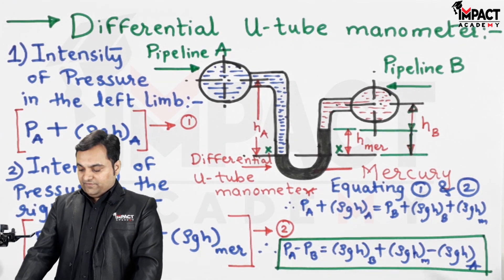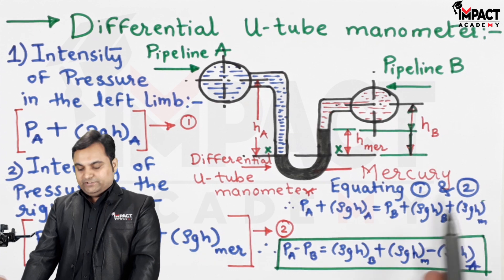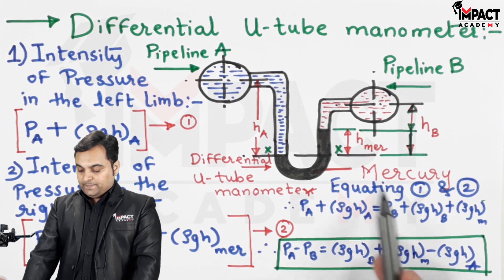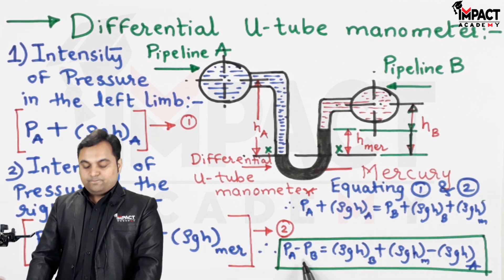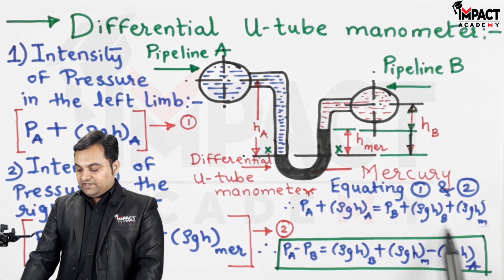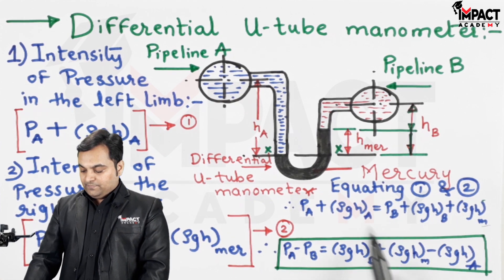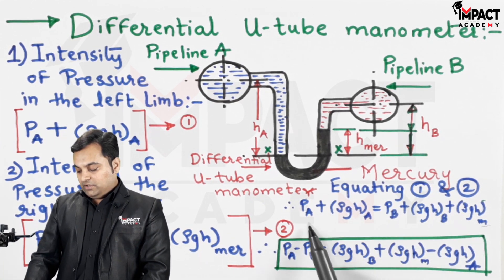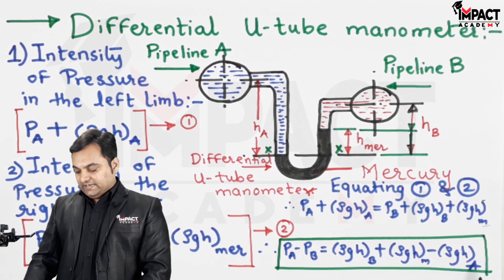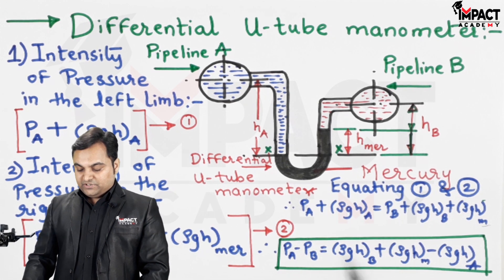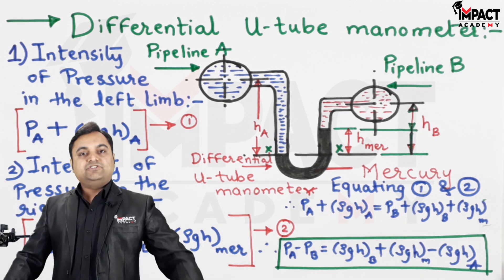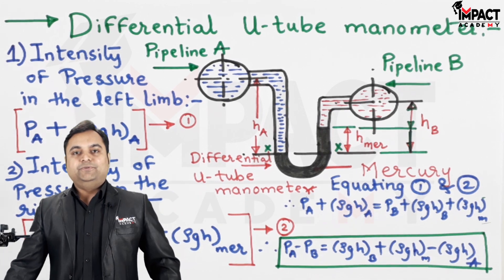Equating equation one and equation two, I have kept PA on the left side and brought PB to the left side as well, giving PA minus PB. The remaining terms shift to the right-hand side, including ρA × g × HA. In this way we can find the pressure difference between two pipelines by using a differential U-tube manometer.